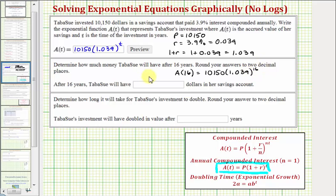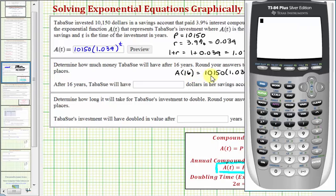So let's go to the calculator. There's several ways to evaluate this. From the home screen, we could just type in 10,150 times 1.039, close parenthesis, raise to the power of 16, and press Enter. To the nearest cent, the value after 16 years would be $18,720.39.